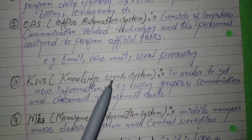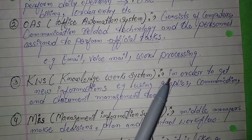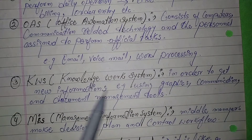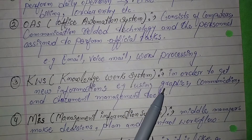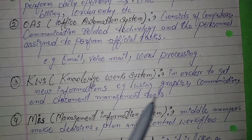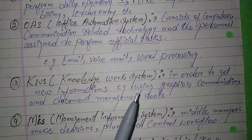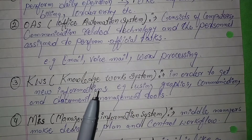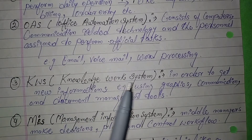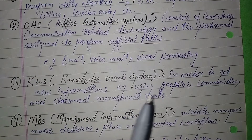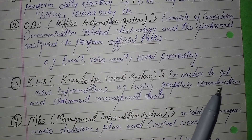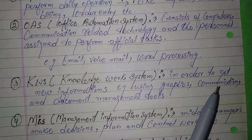The third is KWS, that is Knowledge Work System. It is used to obtain new information easily, for example by using graphical communication and document management tools.